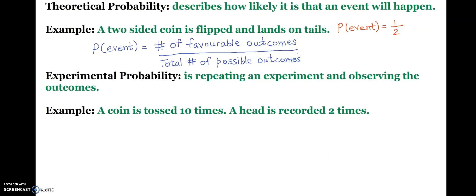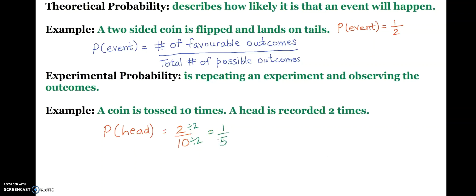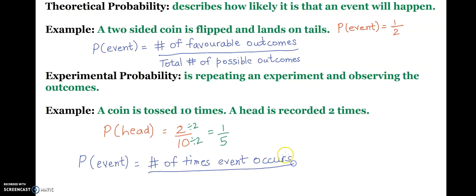The second type is experimental probability — it involves repeating an experiment and observing the outcome. For example, a coin is tossed 10 times and heads is recorded 2 times. So the probability of heads equals 2 over 10. Keep in mind, every time we have a fraction, we reduce it — dividing both by 2 gives 1 over 5. The formula is: probability of any event = number of times event occurs divided by total number of trials.